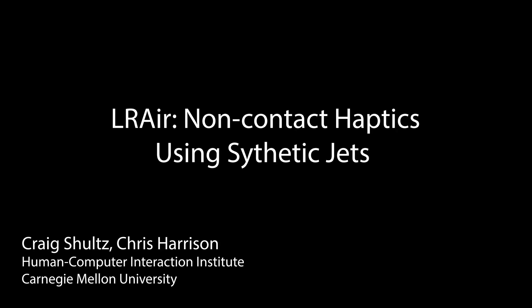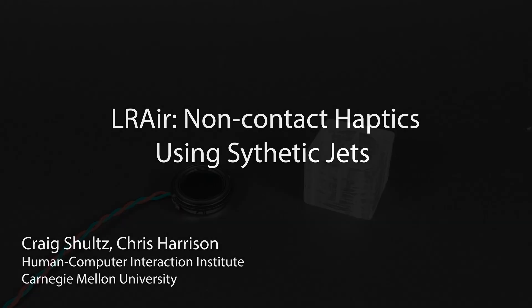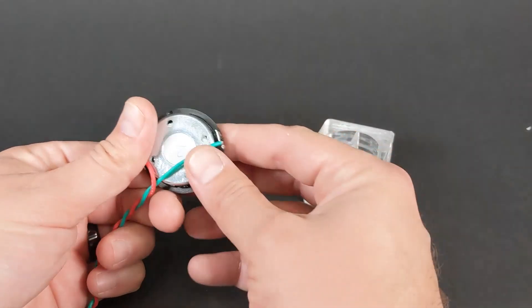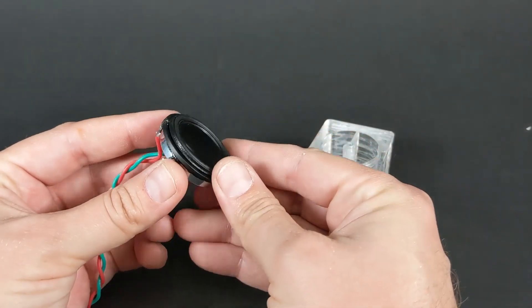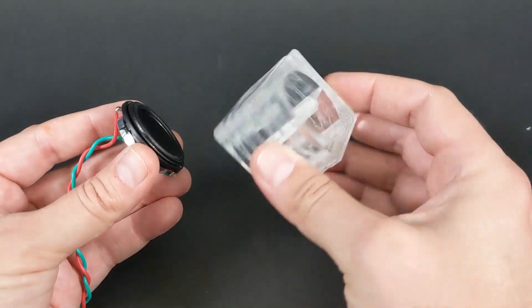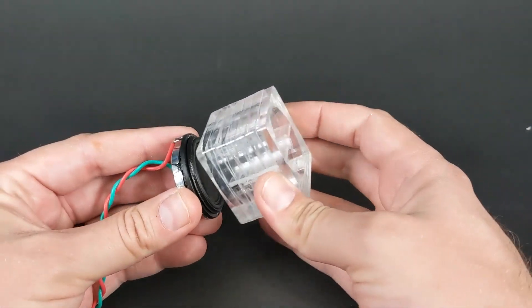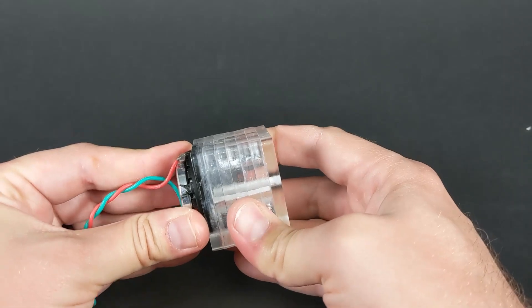In this work, we introduce a new actuation technique to provide mid-air haptic sensation. We call it LR air. This technique uses a miniature loudspeaker as the main force transducer. The speaker output is enclosed by a laser cut acrylic cavity with a long, 4 millimeter diameter hole.